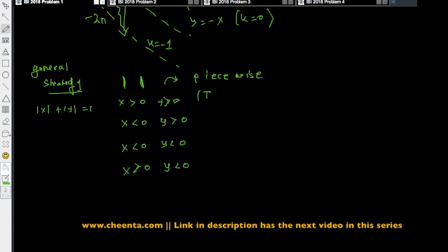So, first quadrant: the equation would be, both of them are greater than 0, so absolute value would be just x and y, that is equal to 1. Second quadrant would be: x is less than 0, so absolute value of x is -x, so -x + y = 1.